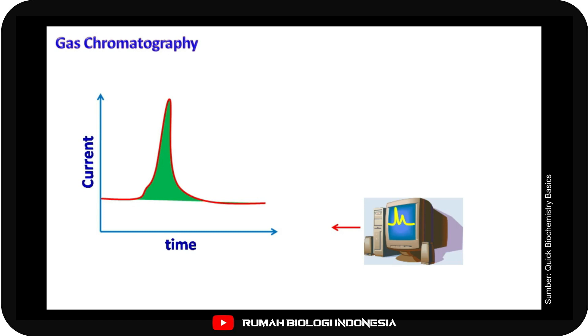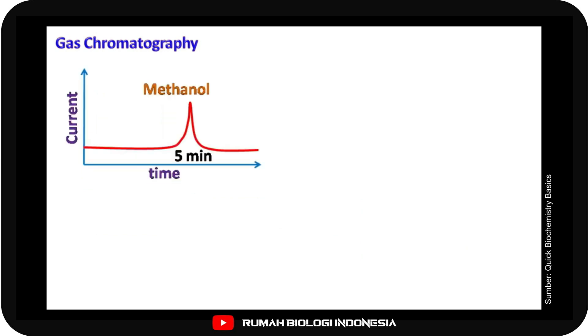For the detection of unknown samples, we need to have standards. Let's understand this with an example. Suppose we run methanol as our sample and the peak of methanol is obtained at 5 minutes.